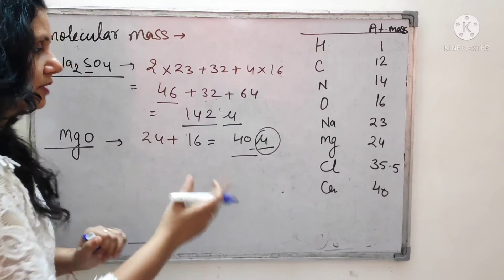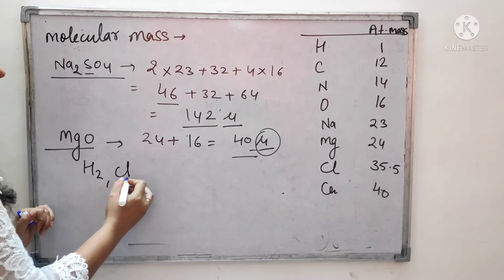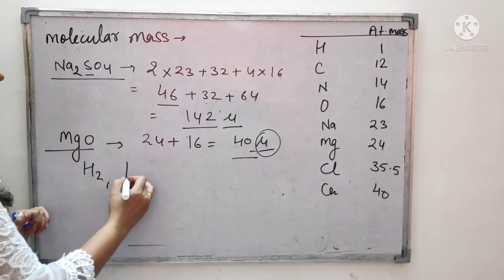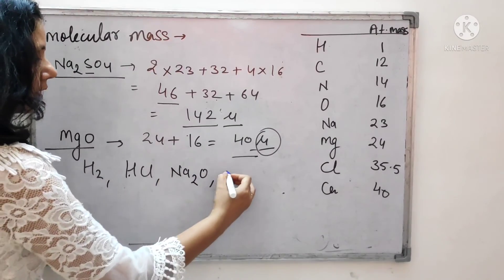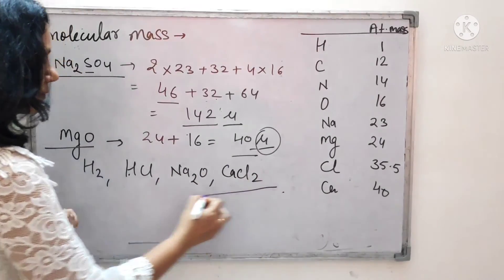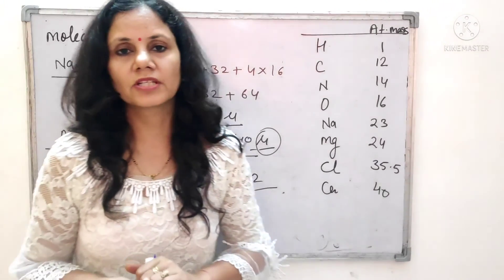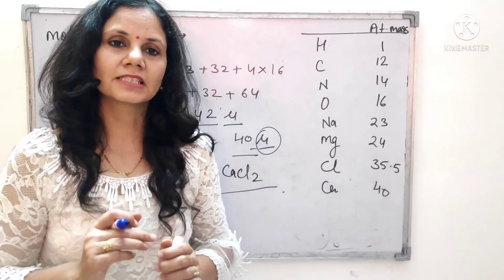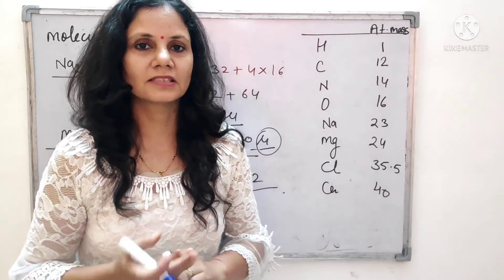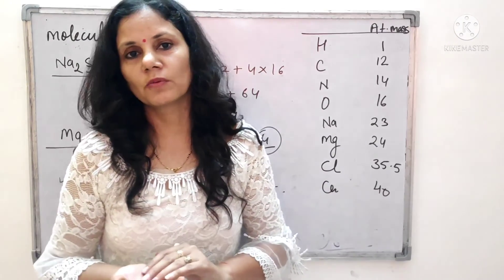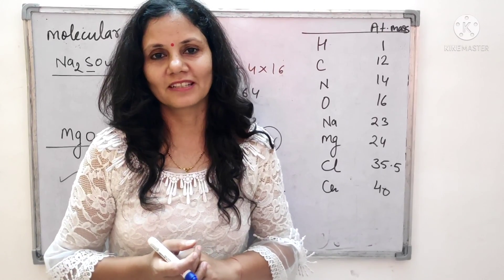So in this way, you will get many molecules to find the molecular mass. Practice examples include H2, HCl, Na2O, and CaCl2 — find their molecular masses using the table. So today we discussed chemical formulas and molecular masses. The remaining part of the chapter we will do in the next video. Please like and subscribe to my channel.